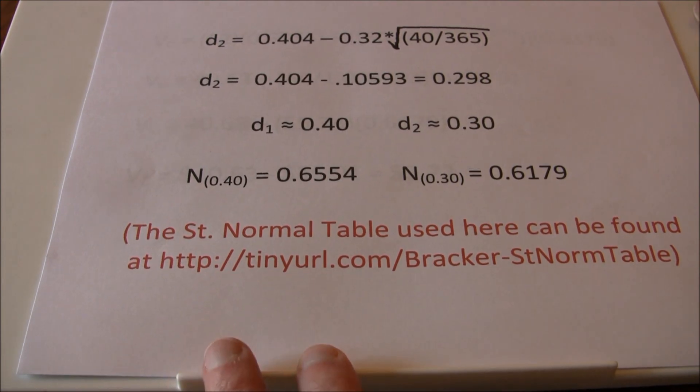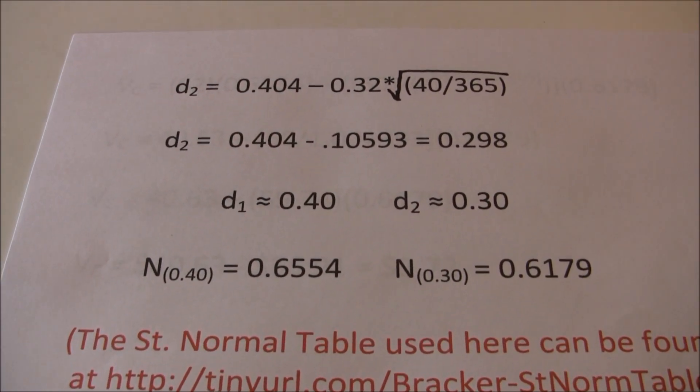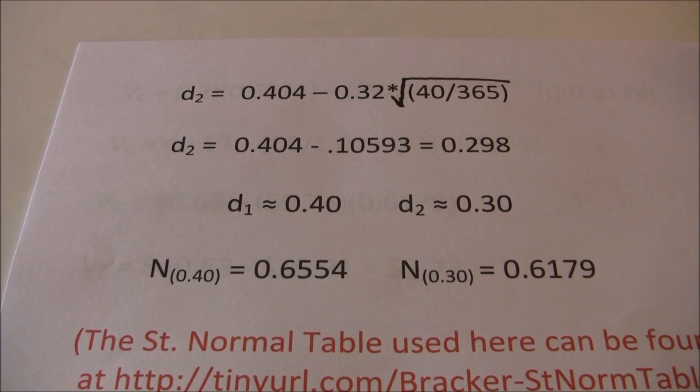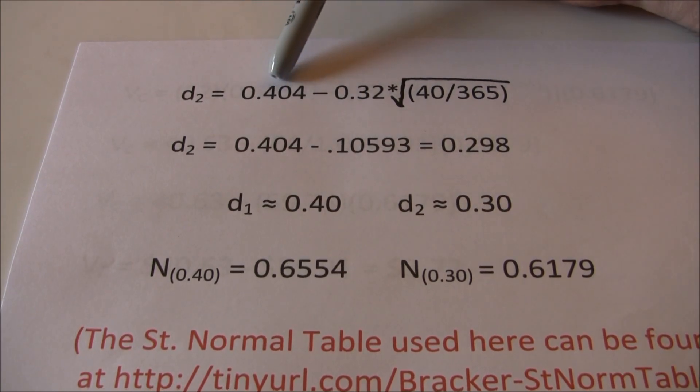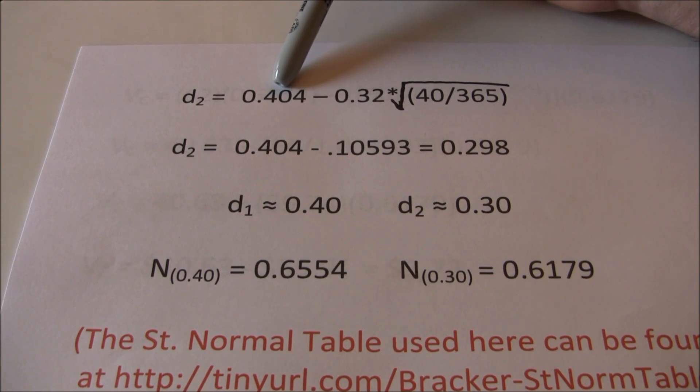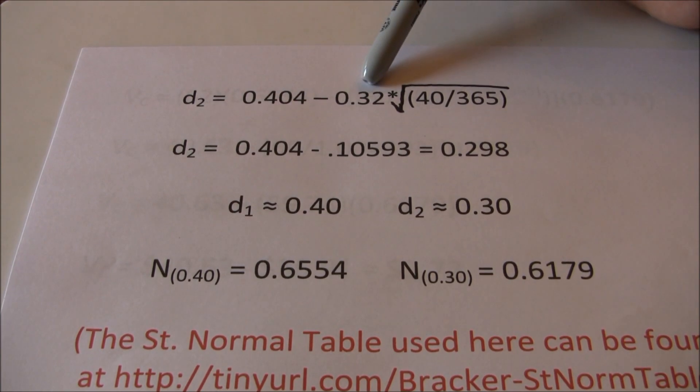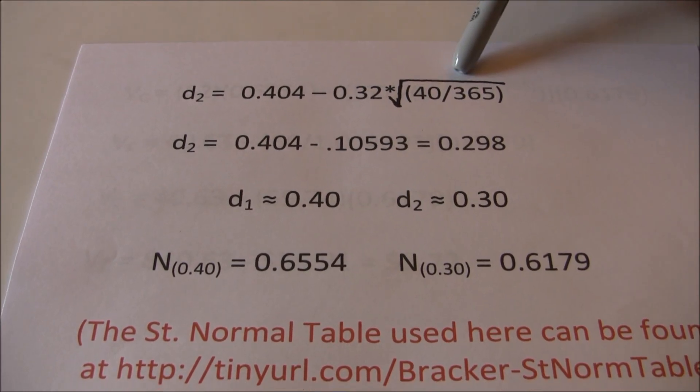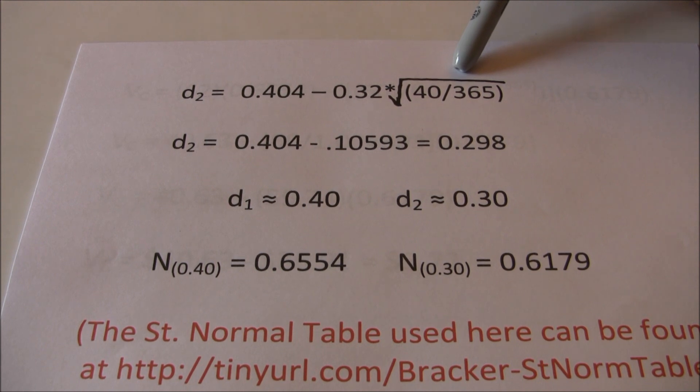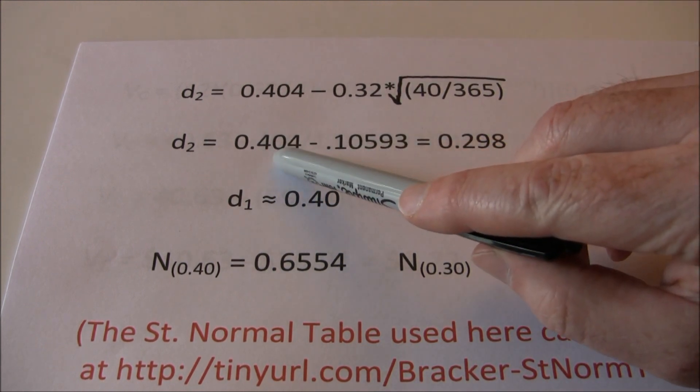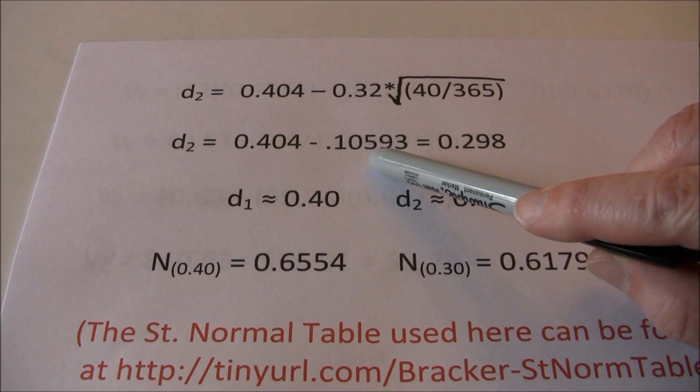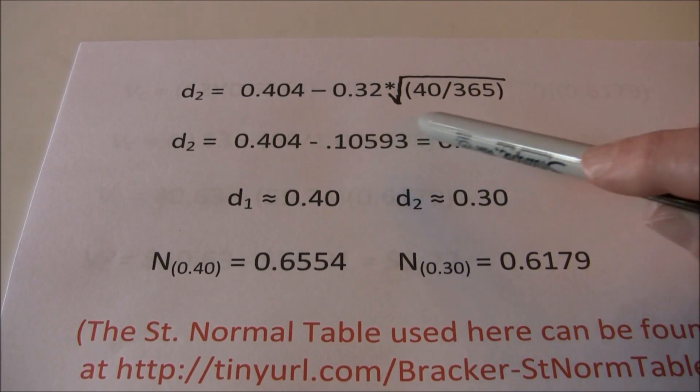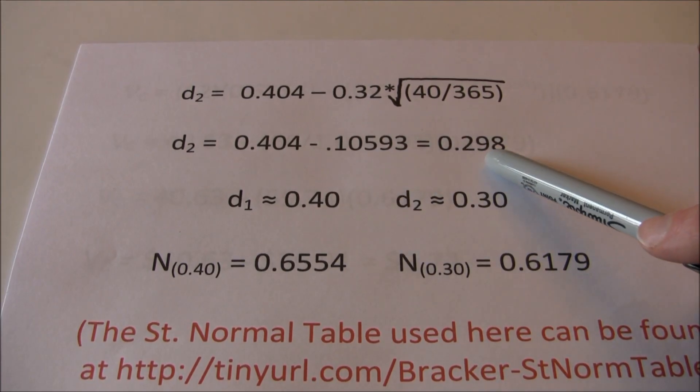Now we need D2. D2, remember, was our much simpler formula, just D1 minus the standard deviation times the square root of time. So we've got D1 here, what we solved for in the last page, minus the standard deviation times the square root of time. Alright. Again, just go through the calculations, 0.404 minus 0.10593 gives us 0.298.